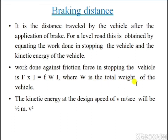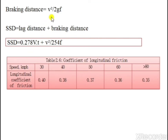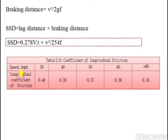The kinetic energy at design speed V meter per second is ½mV². Therefore, braking distance equals V² / (2gf). The total stopping sight distance equals lag distance plus braking distance: SSD = 0.278VT + V² / (254f), where V is in km/h. The coefficient of longitudinal friction varies with speed: for 30 km/h it is 0.4, for 40 km/h it is 0.38, decreasing for higher speeds above 80 km/h.